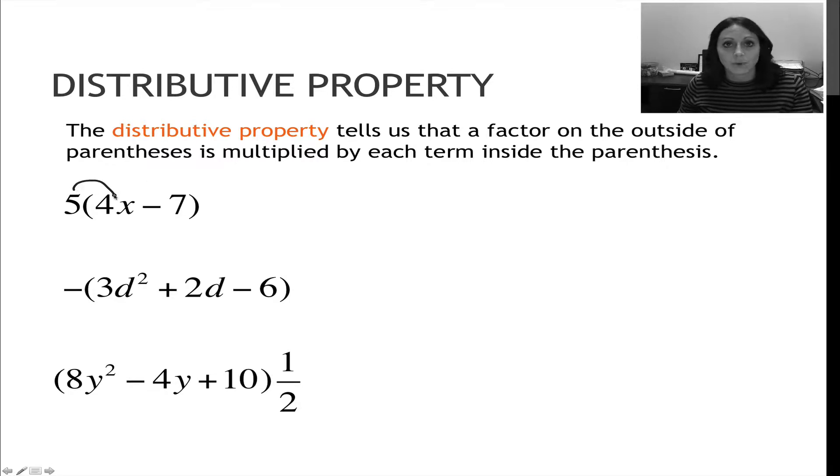So I'm going to take 5 times 4x, and I'm going to take 5 times minus 7. When you multiply a number by a term that has a variable, you're really multiplying the number by the coefficient, so 5 times 4 to get me 20, but then you can't forget to leave the variable on there. So 5 times 4 is 20, but I've got an x, so it's 20x.